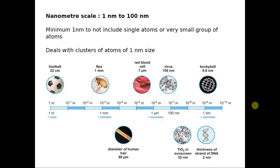This figure shows a simple comparison of size. When we understand nanoscale, we define it in the range of 1 nanometer to 100 nanometers. We keep 1 nanometer as the minimum so that we don't include single atoms or very small groups of atoms — the diameter of a single atom is of the order of a femtometer. Hence we obtain a minimum size of 1 nanometer; even if we have clusters of atoms, we limit it to 1 nanometer.